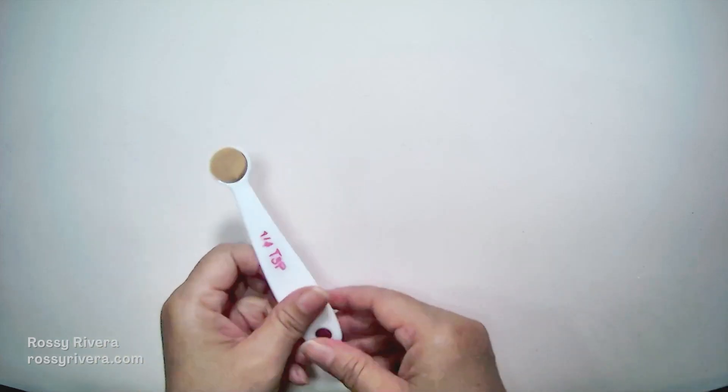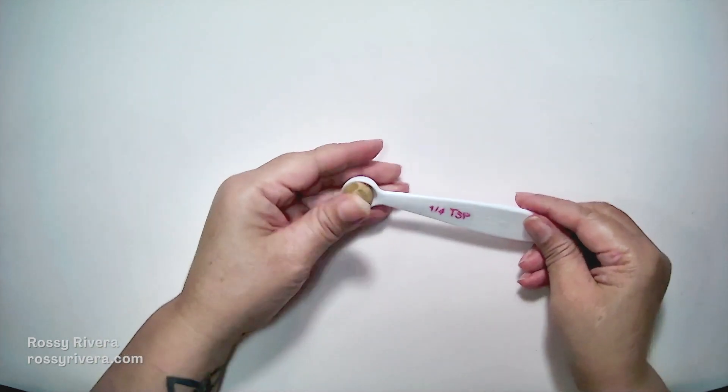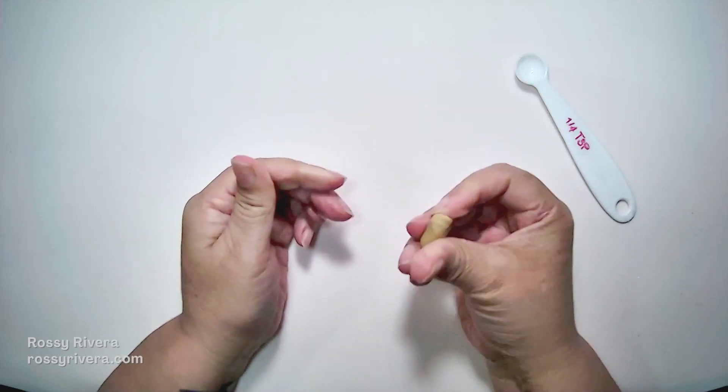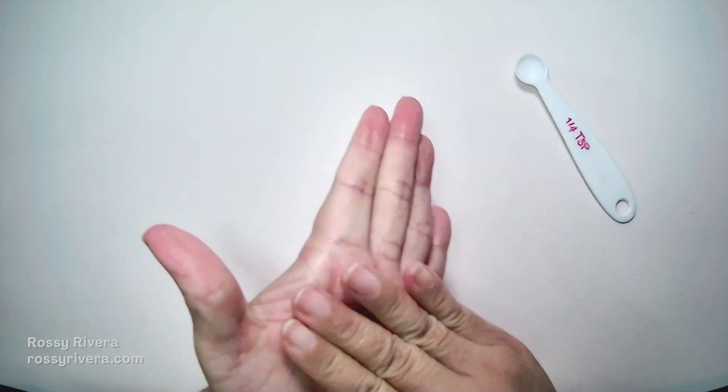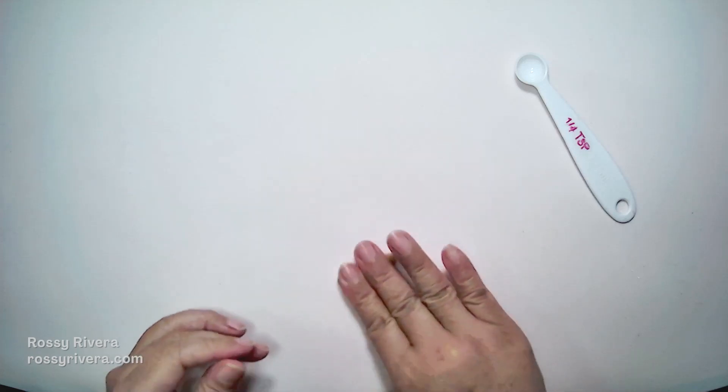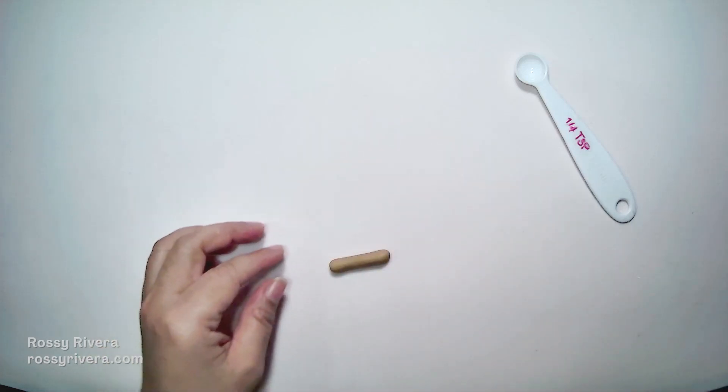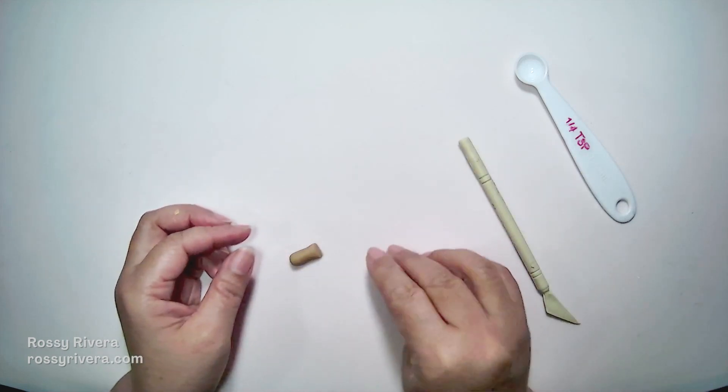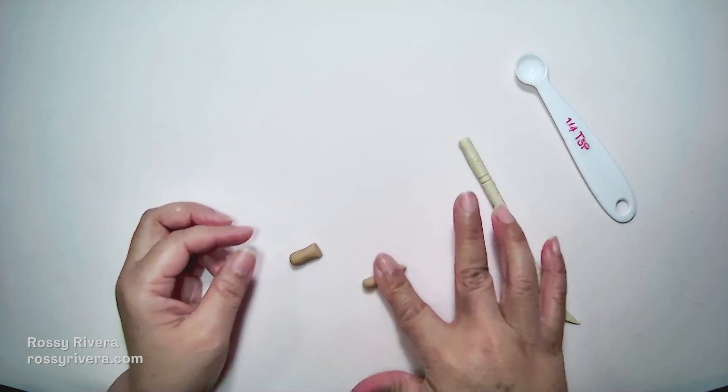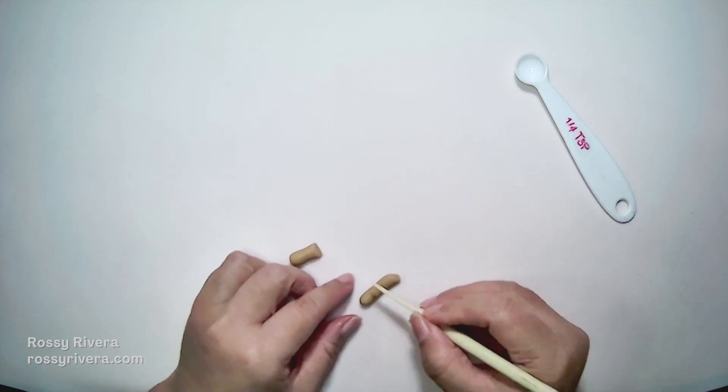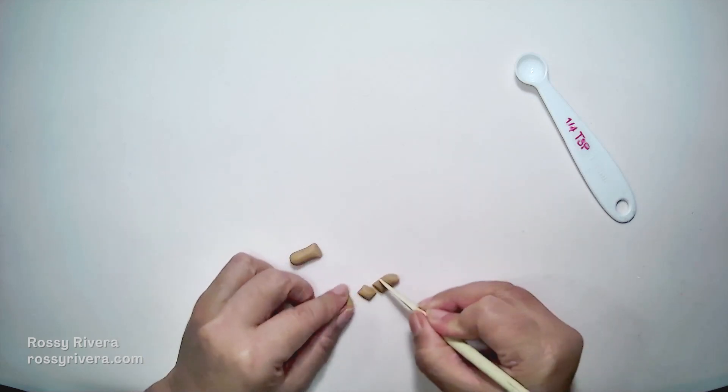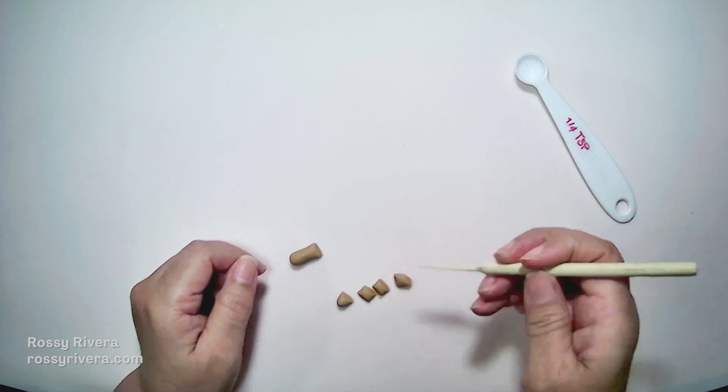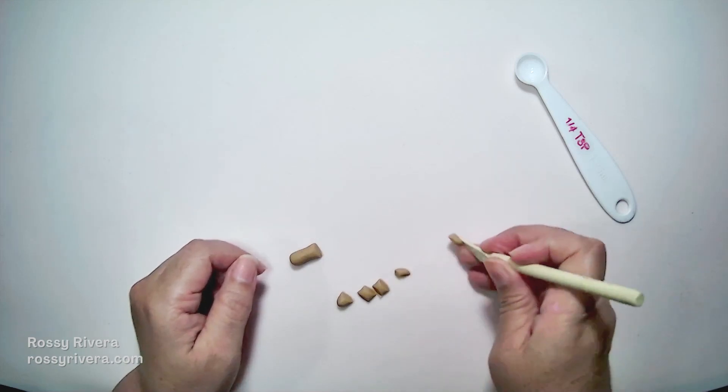To begin we're going to start by measuring one fourth of a teaspoon of clay in this yellow ochre color, we're kneading that thoroughly, forming it into a ball and then stretching out into a cylinder to start cutting it. So we cut it in the middle and one of these halves, we're going to stretch it again and then cut it into four pieces now. This is just so we have a reference for the size, you can also do this just by calculating.